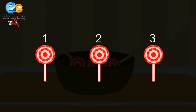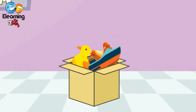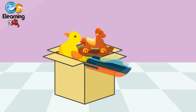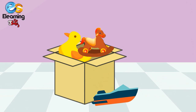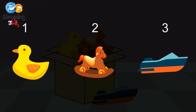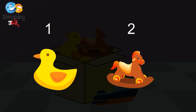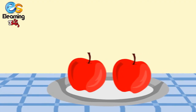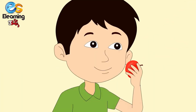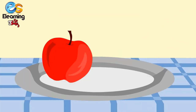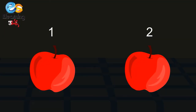One, two, three — three lollipops are left. Three toys in a box — one falls down. How many are left? Three toys minus one toy is equal to two. One, two — two toys are left. Two apples on a plate — my brother eats one. How many are left? Two apples minus one apple is equal to one — one apple is left.